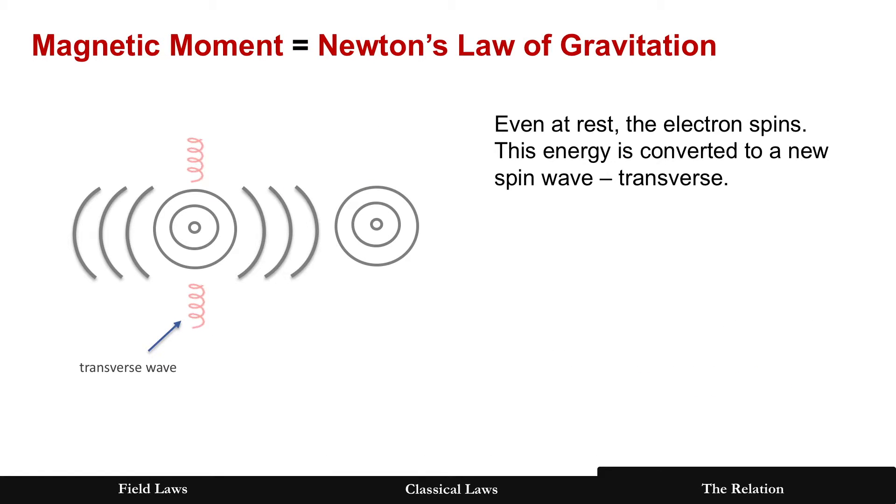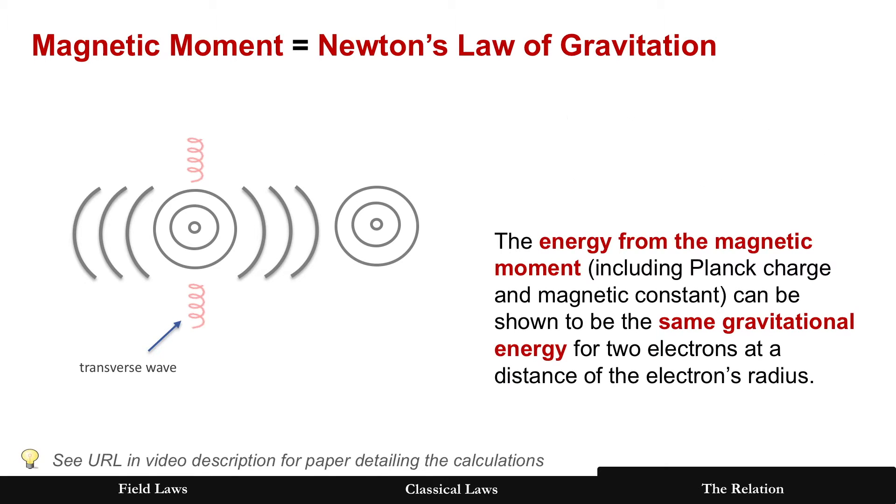Now the same thing happens though for the transverse wave. And the last one we discovered, we went over the longitudinal waves. At rest, even at rest, an electron is spinning, creates a transverse wave and that energy is now lost in longitudinal wave energy, but it can be shown that the energy from the magnetic moment of the electron...